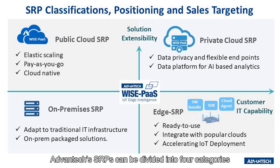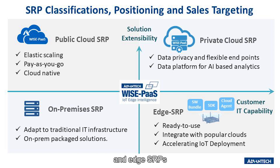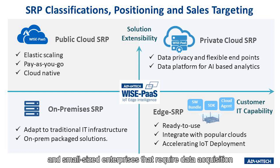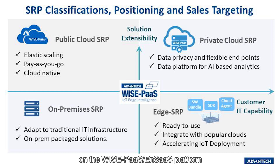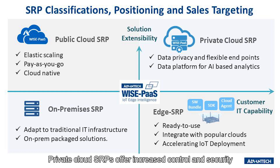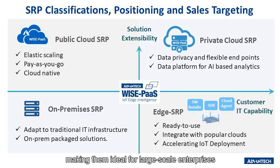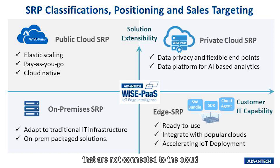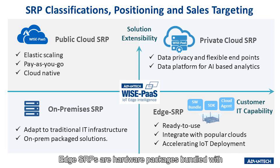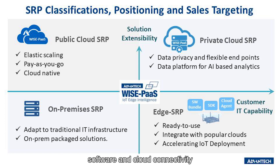Advantech's SRPs can be divided into four categories: public cloud SRPs, private cloud SRPs, on-site SRPs, and edge SRPs. Public cloud SRPs are ideal for medium and small-sized enterprises that require data acquisition and analysis capabilities on the WisePass NSAS platform. Private cloud SRPs offer increased control and security, making them ideal for large-scale enterprises. On-site SRPs are local-sized solutions that are not connected to the cloud. Edge SRPs are hardware packages bundled with software and cloud connectivity.